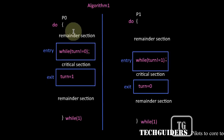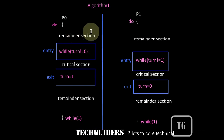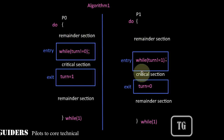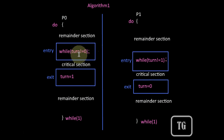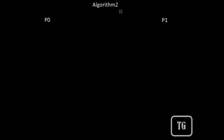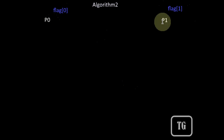Let's discuss another algorithm to solve the critical section problem involving two processes. The problem with the previous algorithm was that both processes share a single global variable called 'turn', and this variable doesn't keep any information regarding whether the process is interested to enter the critical section or not. In this algorithm, we keep a separate flag for each process: flag[0] for P0 and flag[1] for P1.